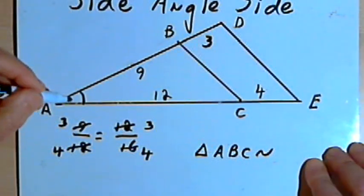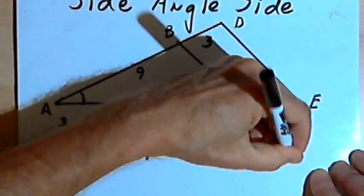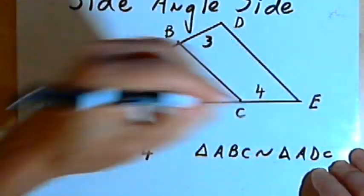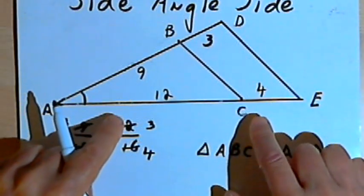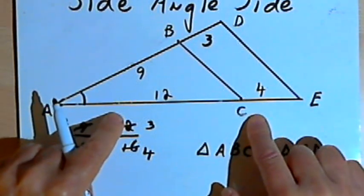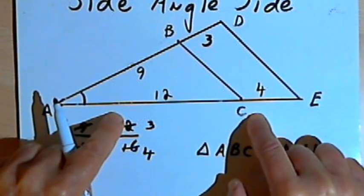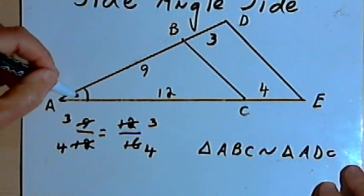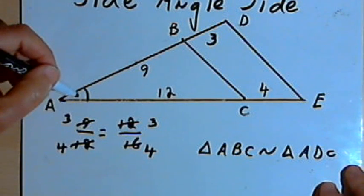That means triangle ABC is similar to triangle ADE, because they had two pairs of corresponding sides that were proportional, and the included angle A is congruent with angle A.